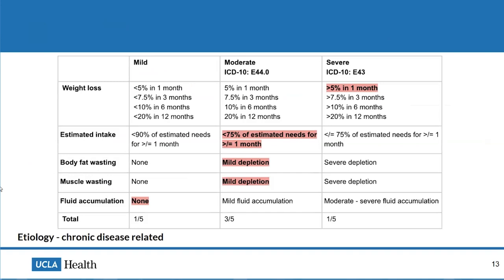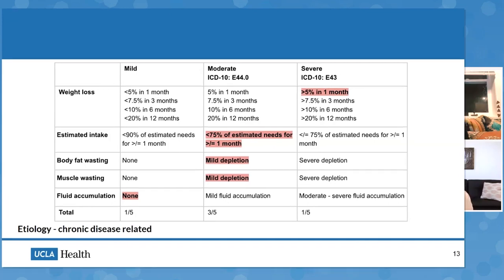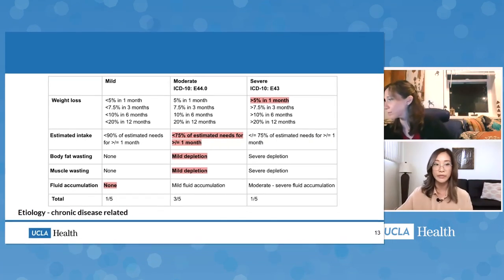As UCLA dietitians, we use the ASPEN and AND criteria. This is a snapshot of what you'd see for a patient under the chronic illness category. Weight loss here is based on percentage of weight loss, not pounds — starting at 5% in one month, 7.5% in three months, 10% in six months, and 20% in 12 months. The moderate and severe category is where you see more aggressive nutrition interventions, and notice that ICD-10 codes are attached to these. Mild malnutrition triggers surveillance because patients can jump to severe during their treatment course.